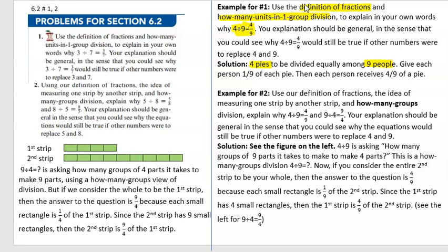Notice that everybody receives 1/9 from each pie, so they receive a total of 4/9, because they got 1/9 from the first pie, 1/9 from the second, 1/9 from the third, and 1/9 from the fourth pie. So that's altogether 4/9 of a pie. That's how we do the first one.